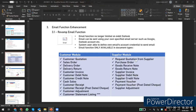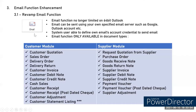The email function is currently available for two document types: the Customer Module — including quotation, sales order, DO, invoice, debit/credit note, and receipt — and the Supplier Module — including quotation, PO, GRN, and other supplier documents. Customer Statement Listing has a special note that will be explained shortly.